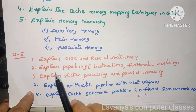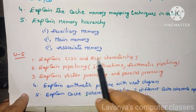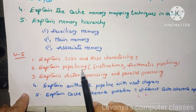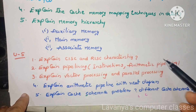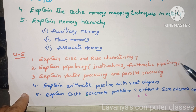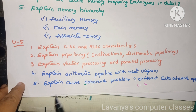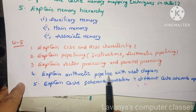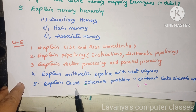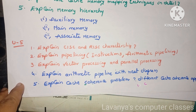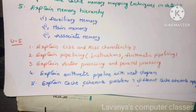Unit 5 questions: explain CISC and RISC characteristics — very important question. Explain pipelining — instruction pipelines and arithmetic pipelines. Next, explain vector processing and parallel processing. Explain arithmetic pipeline with a neat diagram. Explain cache coherence problems and also explain different cache coherence applications.